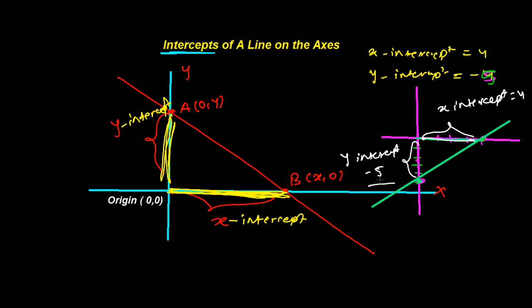Later we need to learn a lot of equations — slope-intercept form and many more. So you need to make your concept clear: intercept means that much length the line is cutting through the x- or y-axis. If I say x-intercept, it is cutting the x-axis; if I say y-intercept, it is cutting the y-axis. I hope you understand.